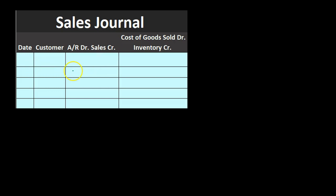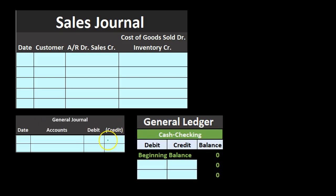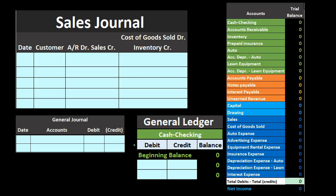If we sold inventory and we have a perpetual system, we would also have cost of goods sold and inventory. We can record this with just one line item — we don't need four accounts as we would in a full journal entry. We don't need to post it until the end of the time period, at which point we'll sum everything up and make one transaction to the general journal for the entire period — whether it be the day, week, or month. We'll then post that to the general ledger, which we'll use to generate the trial balance and financial statements.